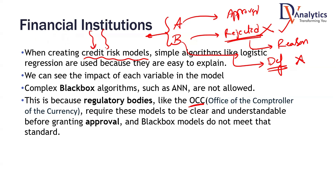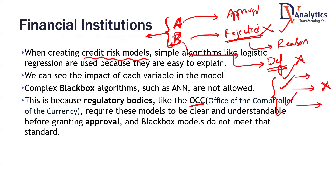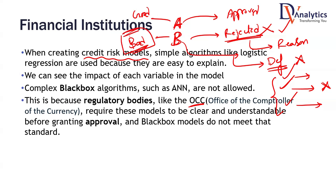That means the credit risk model we are using has to be very much explainable. Because this model is used for approving or rejecting loan applications, and we have to treat everyone fairly. If you are rejecting somebody's loan application, we must tell them what factors we are using to reject them. We must tell them: you have taken too many loans, you have made too many late payments, your utilization is high — maybe a combination of these three is the reason why we are not able to give you a loan.